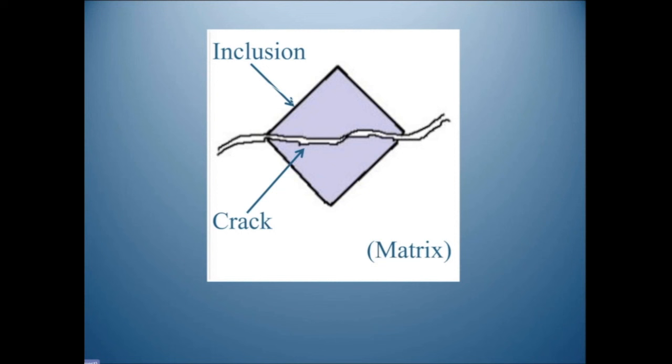The marvelous thing — and I now have a lot of evidence for this — is that the inclusion forms on the crack. The bifilm is there, and inclusions precipitate on it. So the inclusion forms on the bifilm and automatically has a crack in the middle. Stress is never involved.